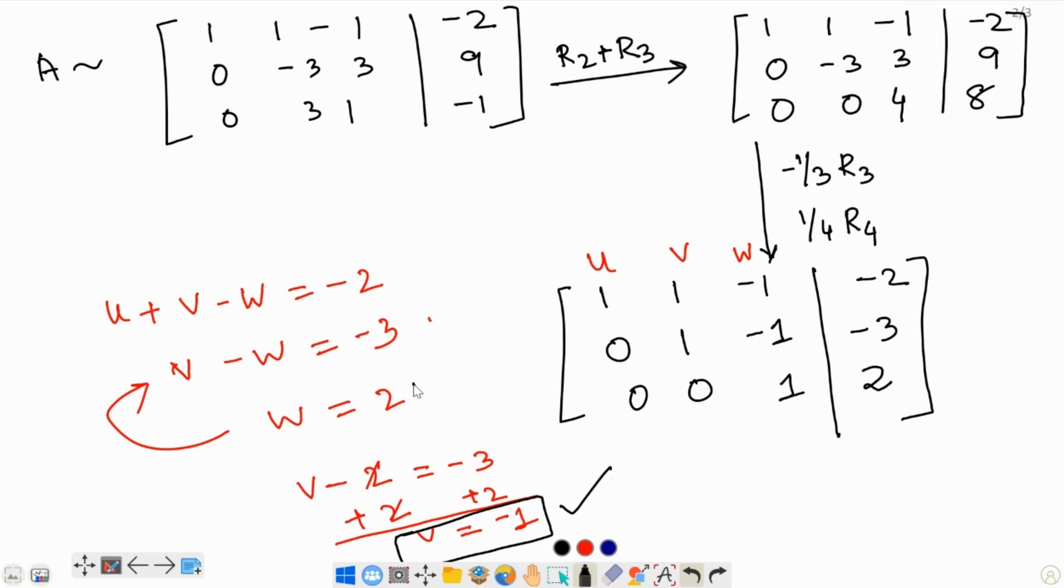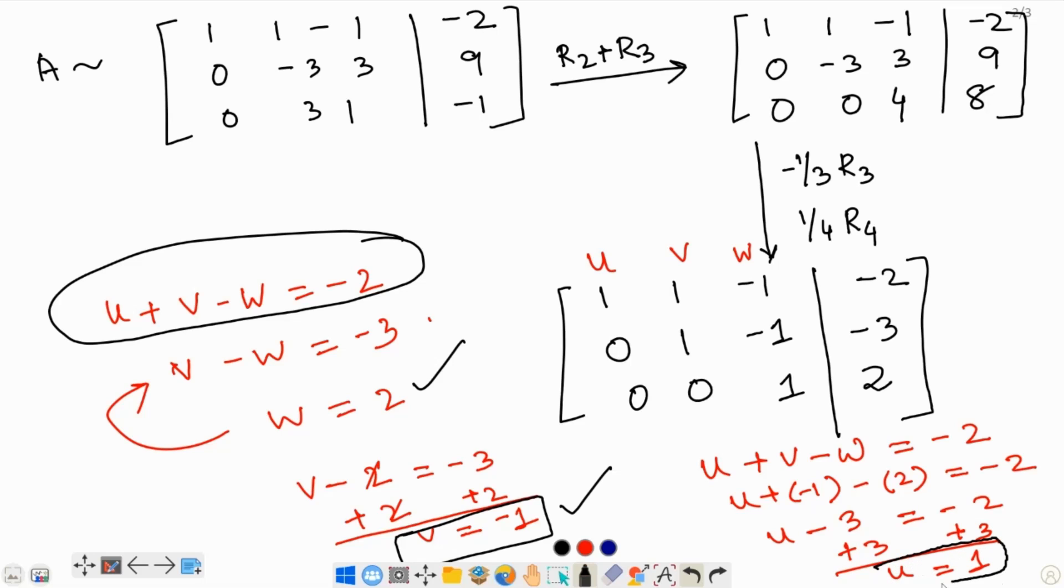Now, let us take v and w and plug it into the first equation to solve for u. So, we are going to have u plus v where v is negative 1 minus w and w is 2. And that is equal to negative 2. So, negative 1 minus 2 is negative 3. And if we add 3 to both sides, negative 2 plus 3 is 1. So, u equals 1. Okay. We have the final answer. So, in the form of u v w it is going to be 1, negative 1 and 2.